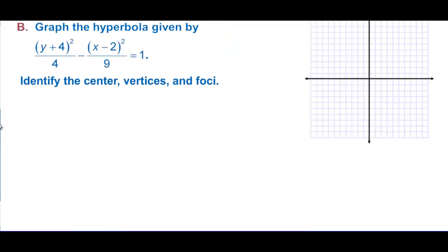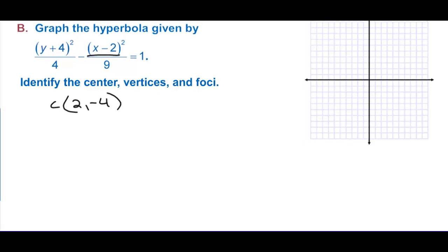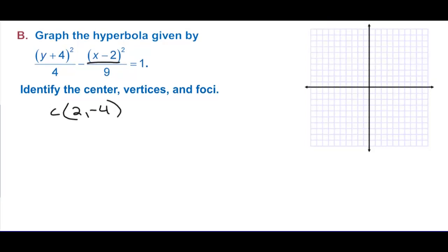Graph the hyperbola and identify the center, vertices, and focal points. We can get the center right away — keep x with x. The center is (2, negative 4). Let's plot that.